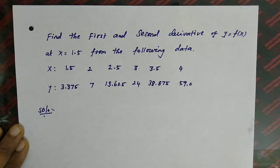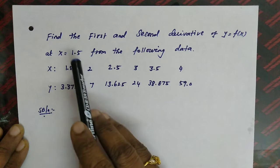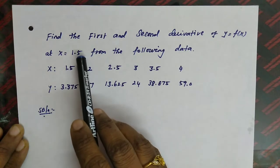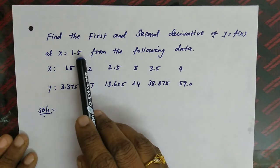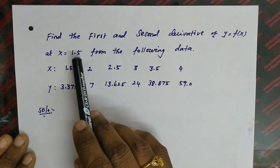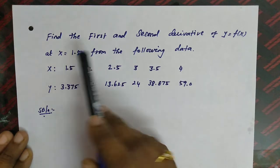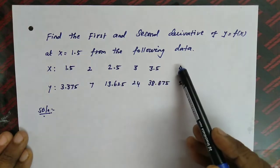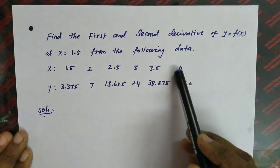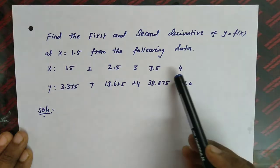For finding dy/dx and d²y/dx² we have two kinds of formulas — forward and backward difference. In this question the value x equal to 1.5 is the beginning value of the data, that is the reason why we are going to use the forward difference formula. If the value were x equal to 3.5 or 4, in that case we would have to use backward difference.